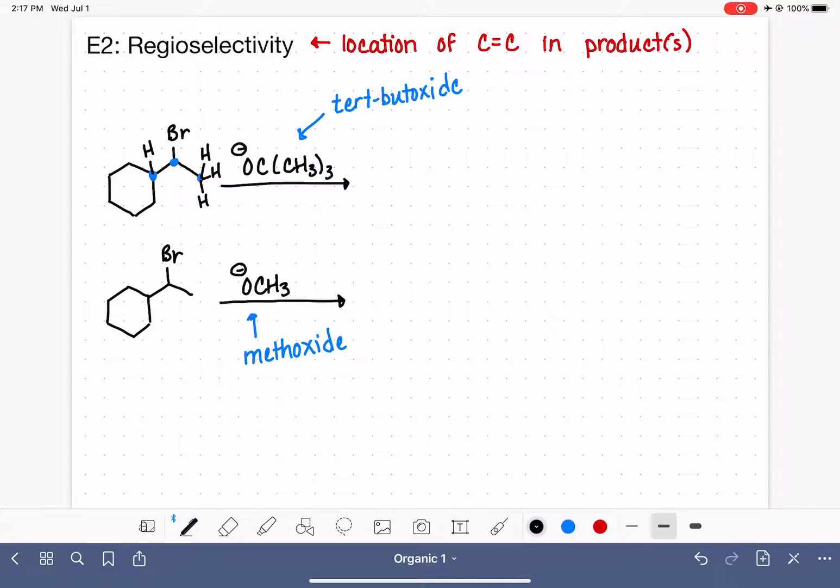The E2 reaction, as a reminder, is our one-step reaction. So this is where everything is happening all at once. We're going to have our base, tert-butoxide in this example, come in and grab any one of those four hydrogens that I drew. I'm just choosing one that's close. And the carbon-hydrogen bonding electrons are going to move down to form the carbon-carbon double bond while the leaving group is being removed. So all of those things are happening at the same time, and the product of this reaction will look like this.